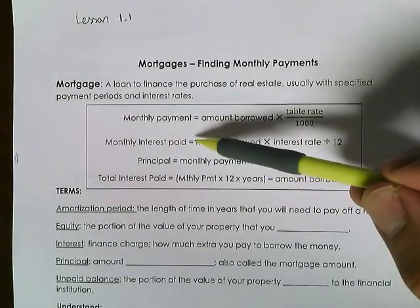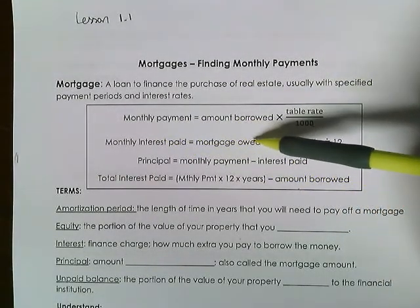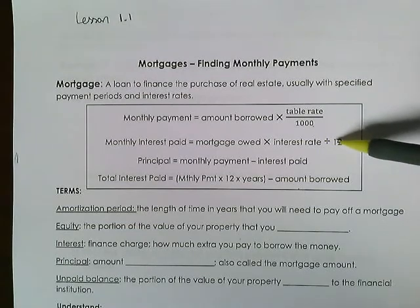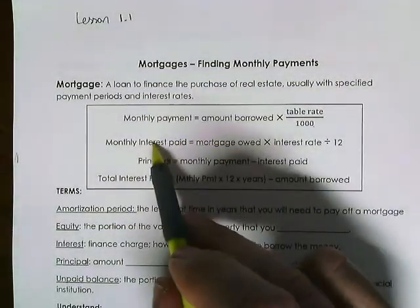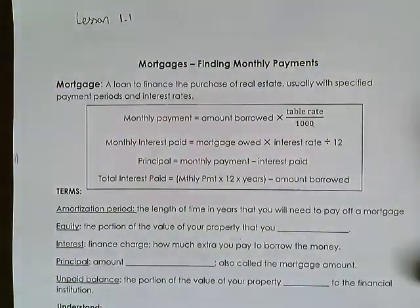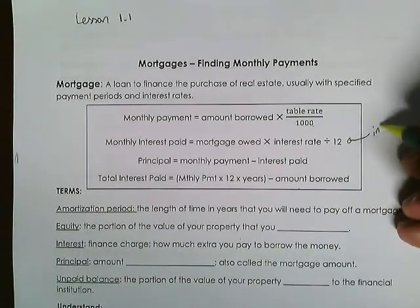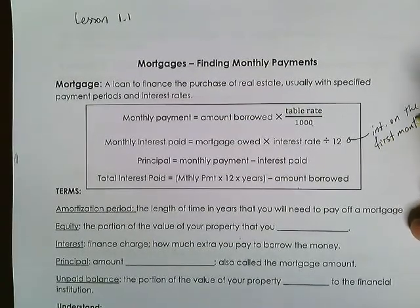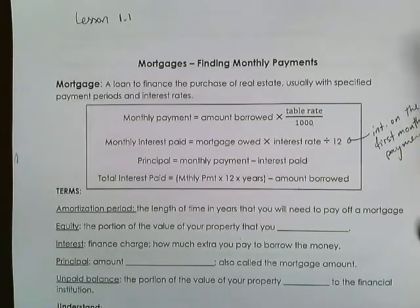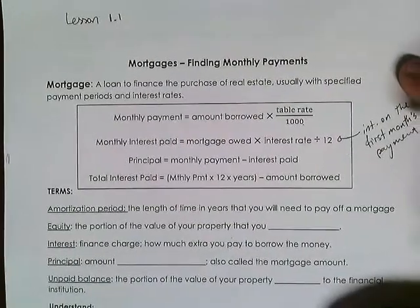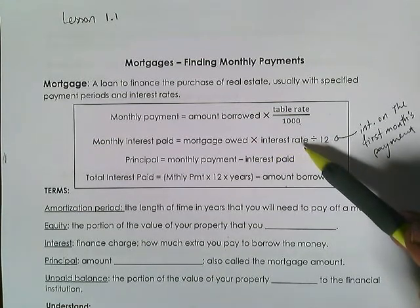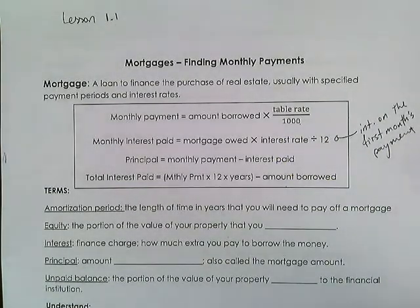Monthly interest paid equals the mortgage owed times the interest rate divided by 12. This is also called the interest for the first month's payment — same as we did with vehicle finance. The interest rate here is not taken from the table; it's the rate you'll be given, like 3.25% or 6.75%.